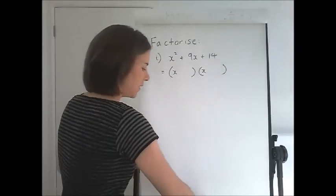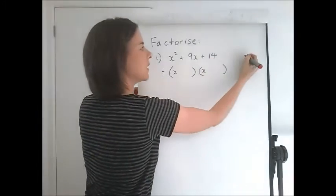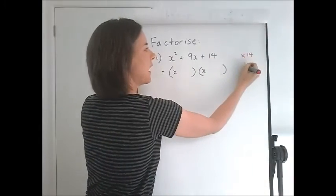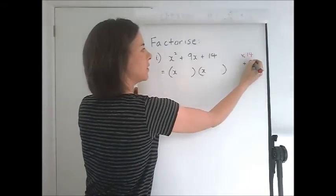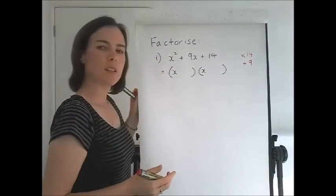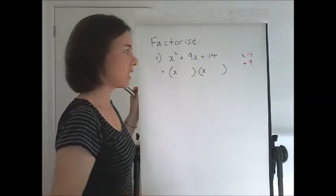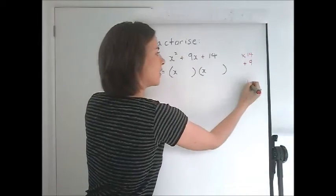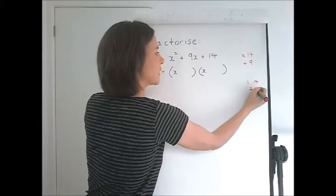And to find them, they must multiply to the number at the end and add to the number in the middle, provided there's nothing here. So think of pairs of numbers that multiply to 14. You've got either 1 and 14 or 2 and 7.